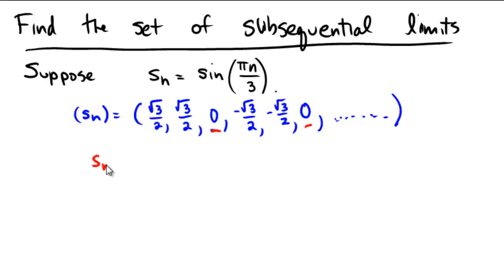So if we took S sub-N sub-K, where N sub-K was defined to be 3K, then you would be taking the third term, the sixth term, the ninth term, and our sequence SNK would look like